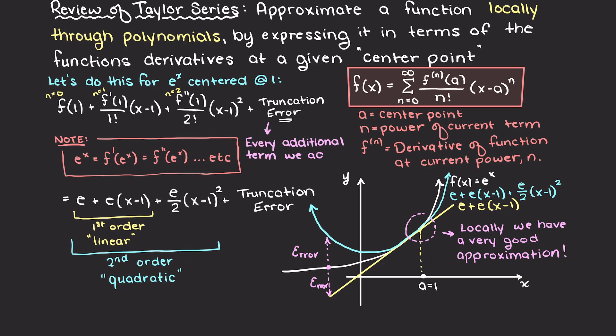This is because we are truncating, or cutting off, additional fitting terms in our Taylor series expansion. With each additional term, our approximation gets better and better as we have less error. Now that we have reviewed Taylor series approximation, how does this help us understand the error of our center difference method?